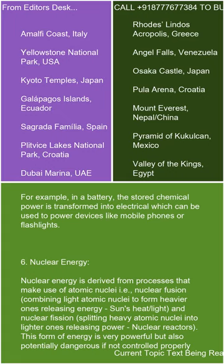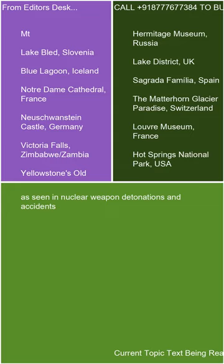6. Nuclear energy. Nuclear energy is derived from processes that make use of atomic nuclei, i.e., nuclear fusion — combining light atomic nuclei to form heavier ones releasing energy, as in the sun's heat and light — and nuclear fission — splitting heavy atomic nuclei into lighter ones releasing energy, as in nuclear reactors. This form of energy is very powerful, but also potentially dangerous if not controlled properly, as seen in nuclear weapon detonations and accidents.